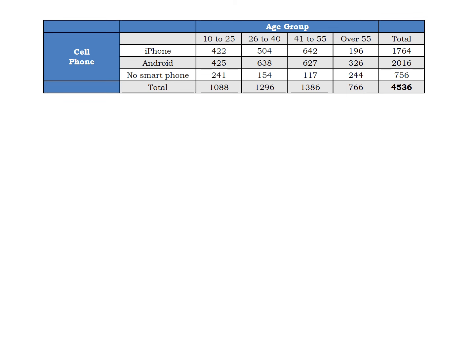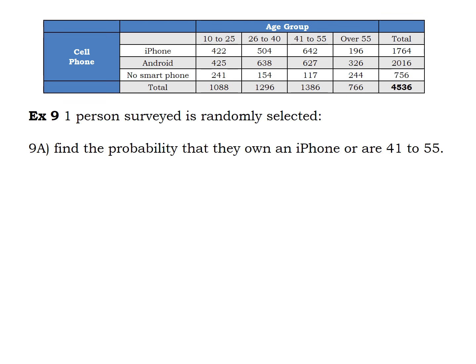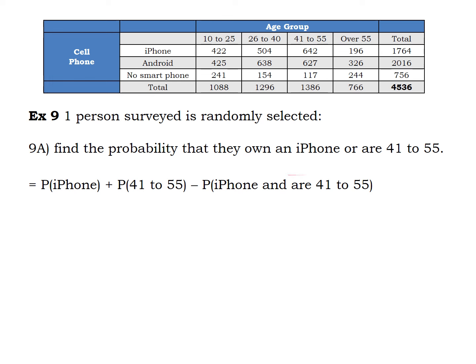Let's look at an OR problem in action. We randomly select one person, and I want the probability that person either owns an iPhone or is in the 41 to 55 age group. We apply the rule: P(iPhone) + P(41 to 55) − P(iPhone and 41 to 55). We've counted all iPhone owners and all people in that age group, but anyone who owns an iPhone and is in the 41 to 55 group has been counted twice, so we must subtract one of those counts.